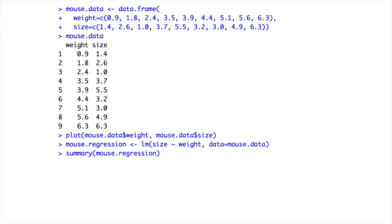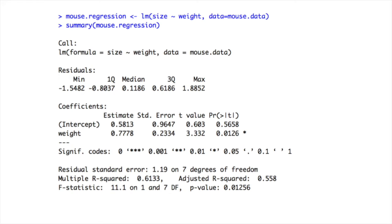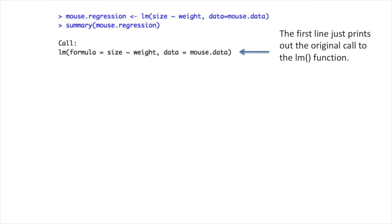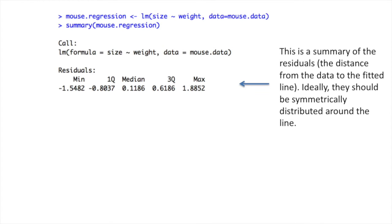In R, the meat of doing a regression is in the Summary function. This function generates all kinds of output, and I'm going to walk through it one step at a time. The first line just prints out the original call to the LM, or Linear Models function.